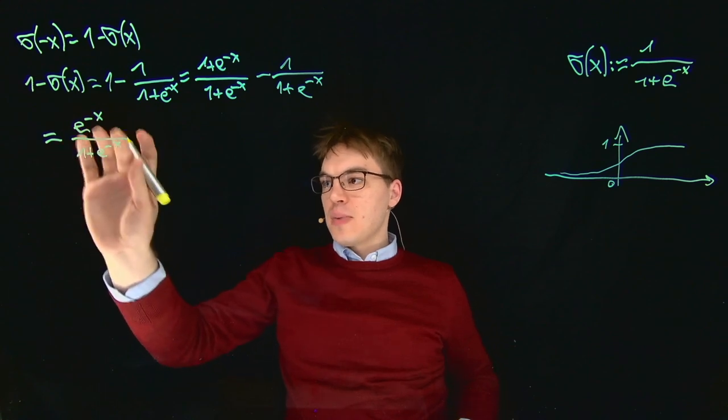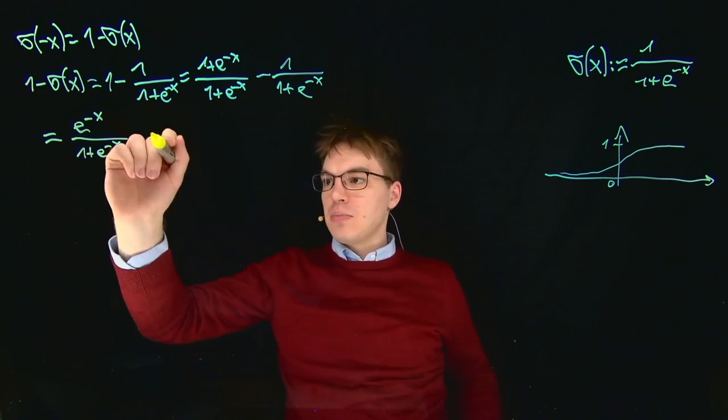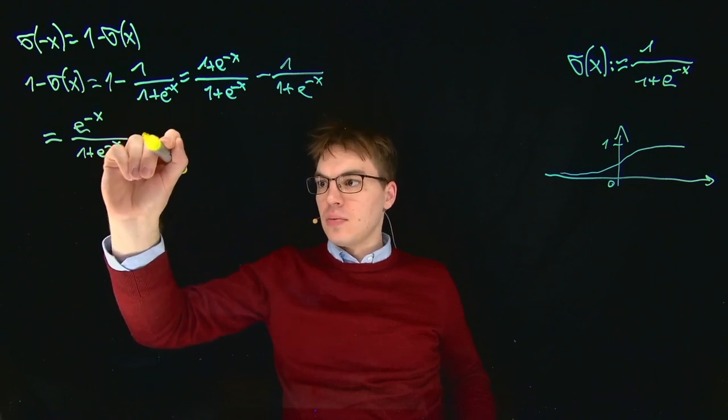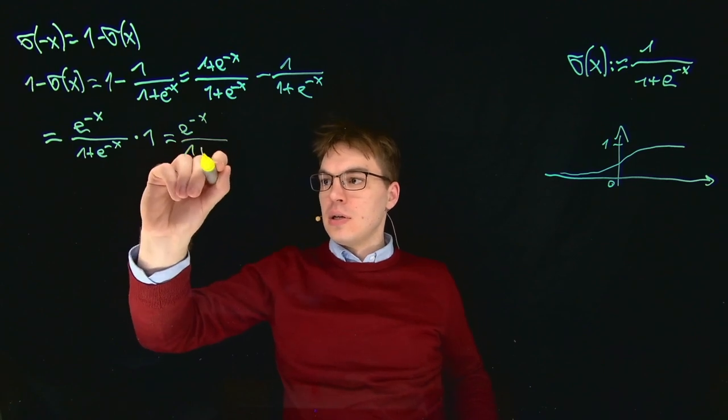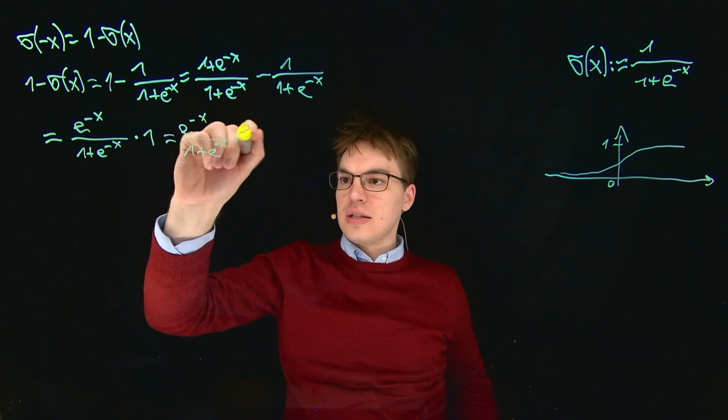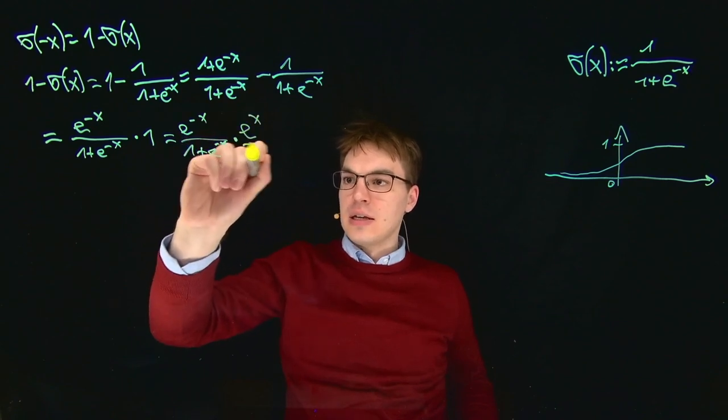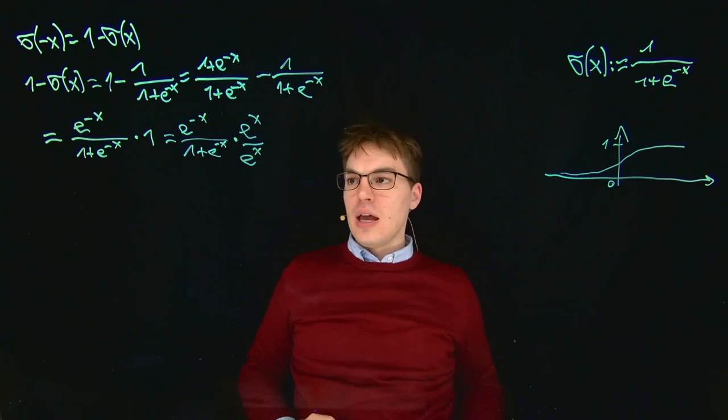In order to get rid of this part over here, we will actually multiply with a one which we will convert into a fraction again, which is e to the power of X divided by e to the power of X.